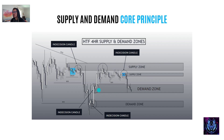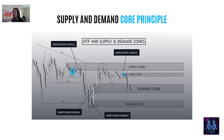We've got the supply zone here with an indecision candle, demand zone indecision, demand zone, supply zone — the indecision candles are the points where the banks are about to make a move. You can see this contraction point marked out, then a massive move, another contraction point, then another massive move. It's super important to mark out these contraction zones because you can anticipate a move before it even occurs. What we do is mark out these zones based on indecision candles — these become liquidity trading zones we wait for price to come into and then look for entries.